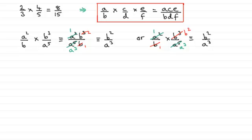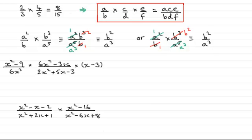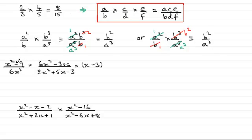Now I've got two examples which I would encourage you to try — they're a little bit more complicated but the principles are the same. With the first one we've got x squared minus 9 divided by 6x cubed, multiplied by 6x squared minus 3x divided by 2x squared plus 5x minus 3, then multiplied by x minus 3. So we have three fractions being multiplied together. We can think of x minus 3 as x minus 3 over 1. Now we've got several terms in the tops of the fractions — for instance x squared minus 9, and three terms in one denominator — so we cannot cancel yet, as there are no common factors.